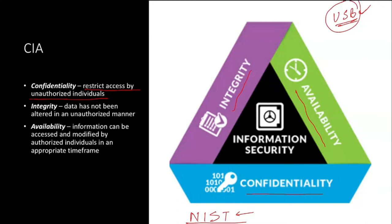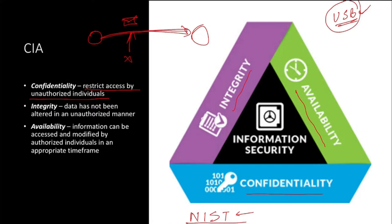Integrity means that data has not been altered in an unauthorized manner. For example, when one user sends a mail to another user and that mail is transmitting over a channel, if nobody in the channel has captured and modified it, we can say the transmission channel has integrity.